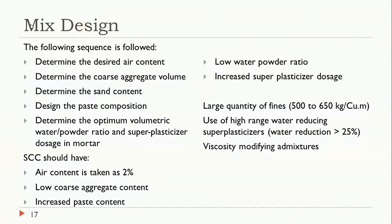SCC should have an air content of no more than 2%. The fines content — cement plus mineral admixtures — should be in the range of 500 to 650 kg/m³. For cement alone, the range is 350 to 450 kg/m³, but with admixtures added it rises to 500–650 kg/m³. High-range water-reducing admixtures (superplasticizers) should be used so that water reduction exceeds 25%. Viscosity modifying admixtures are also used to make the concrete flow.